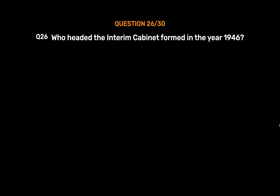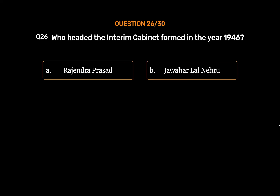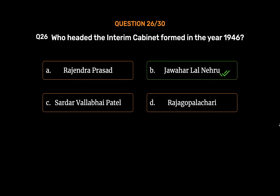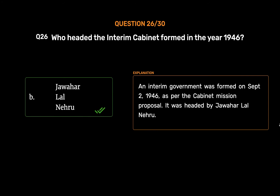Question No. 26. Who headed the interim cabinet formed in the year 1946? Option A: Rajendra Prasad. Option B: Jawaharlal Nehru. Option C: Sardar Vallabh Bhai Patel. Option D: Rajagopalachari. The correct answer is Option B: Jawaharlal Nehru. An interim government was formed on September 2, 1946, as per the cabinet mission proposal. It was headed by Jawaharlal Nehru.